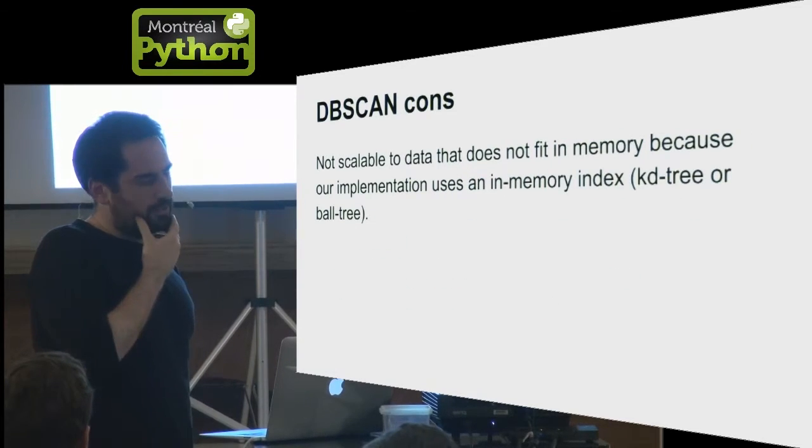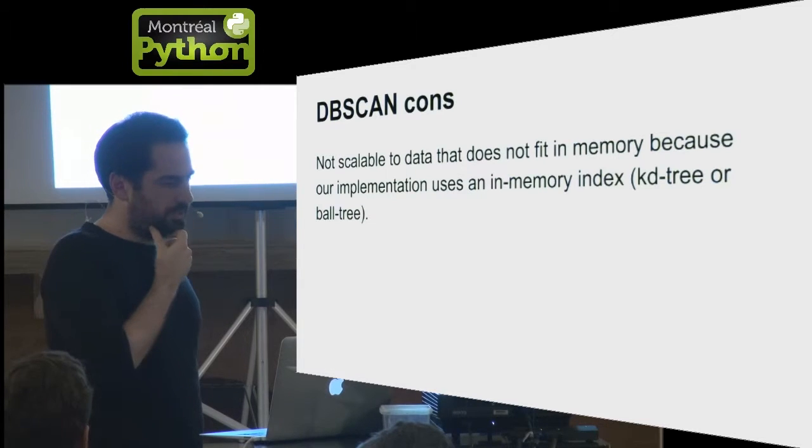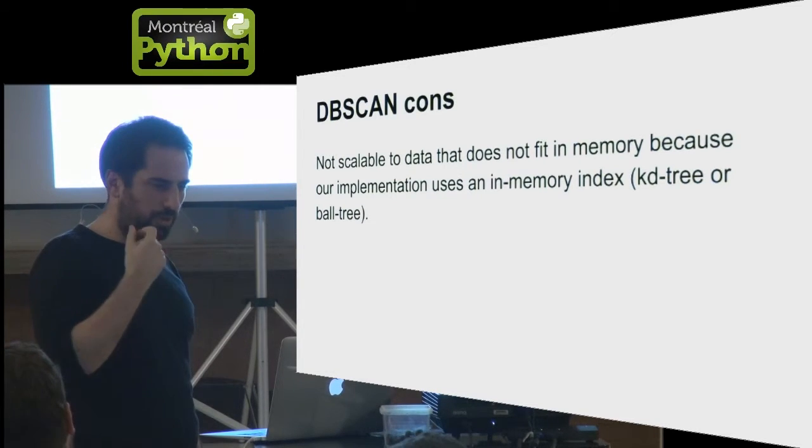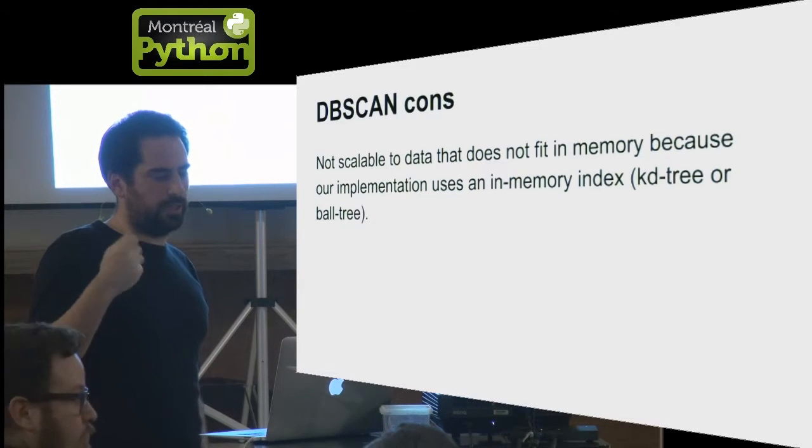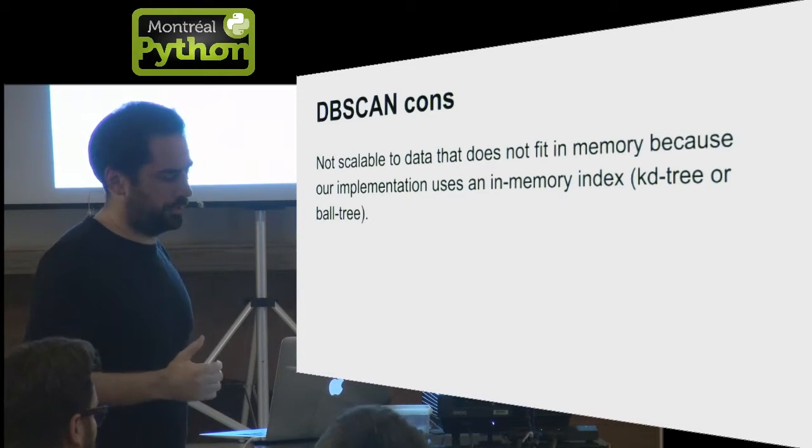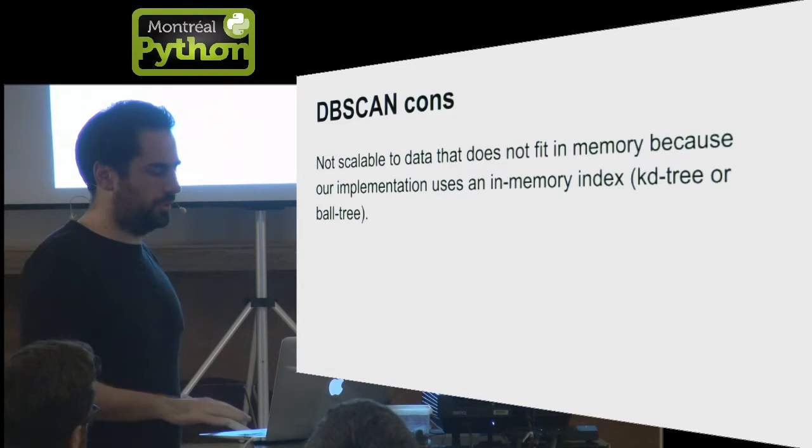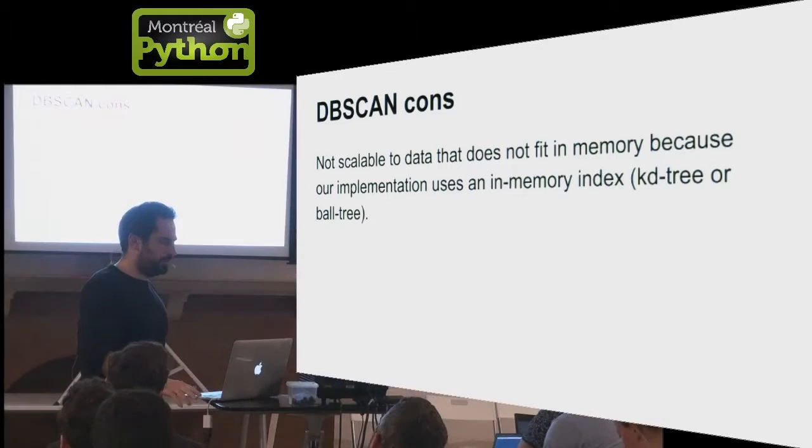The cons is that it's not really scalable because you still need to compute an index of the whole data set, and to have this index work fast it needs to be in memory. At least in scikit-learn we just have an in-memory implementation of those indexes.